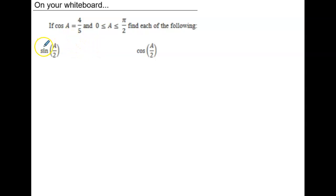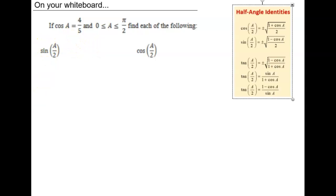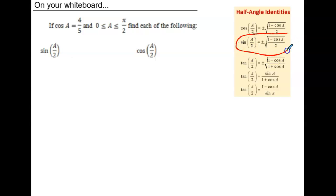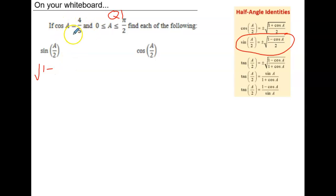For the sine of the angle over 2, we're going to need the sine half angle identity. Since we're in quadrant 1, which was part of our given information, we're going to use the positive square root of 1 minus cosine of a, all divided by 2. So that's going to be the square root of 1 minus, and then we substitute cosine of a with 4 fifths in the identity.